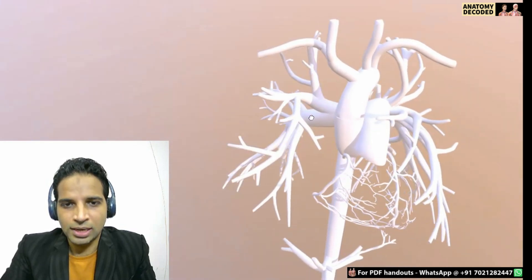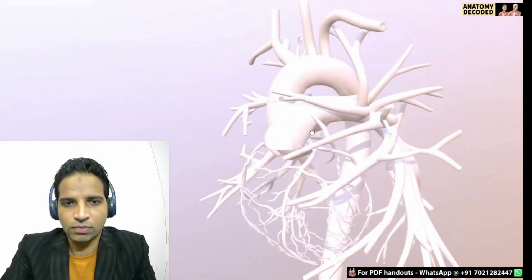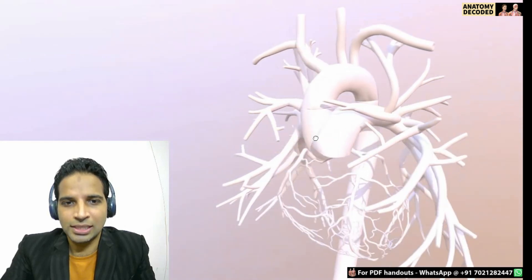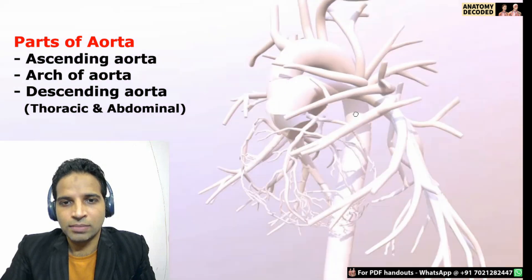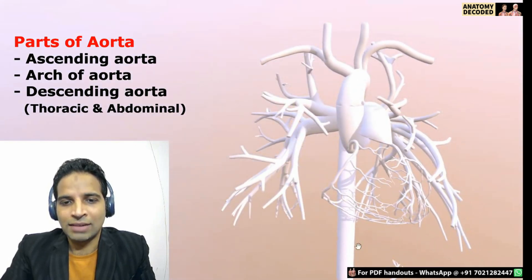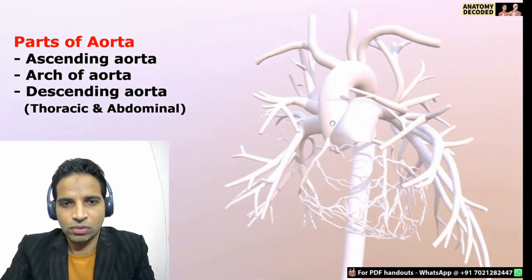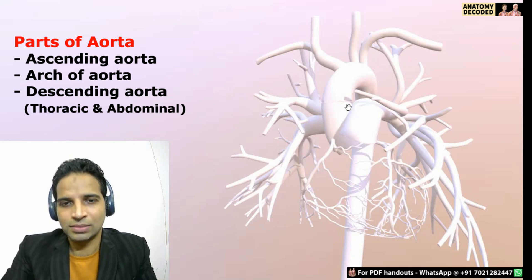Let's cover the various branches of the aorta. We should know the different parts of the aorta arising from the heart. The part is referred to as the ascending aorta, and there is a part which curves referred to as the arch of the aorta. There is a part which descends down in the thoracic cavity — the descending thoracic aorta — and when it crosses the diaphragm, its name changes to the abdominal aorta.